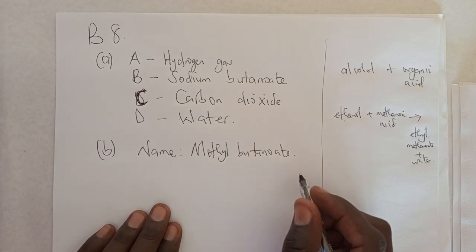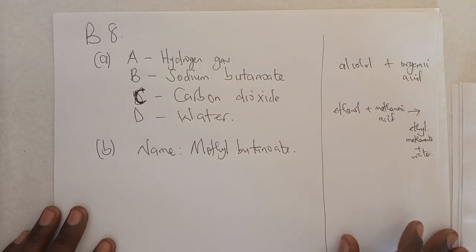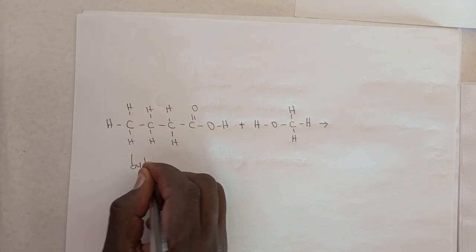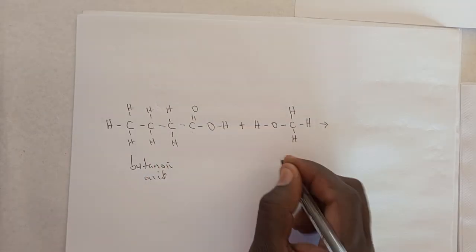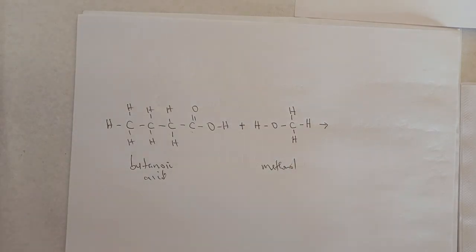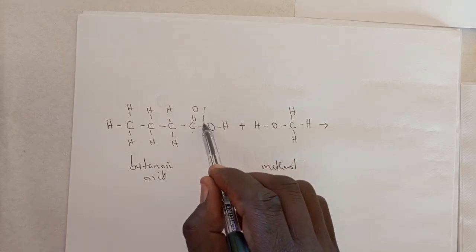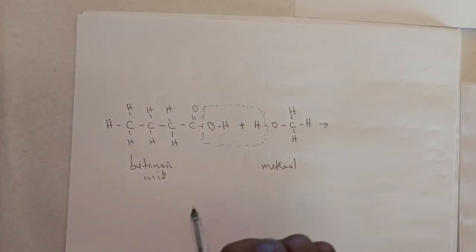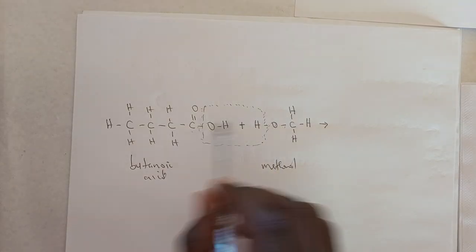We need to know its structure. How do you write its structure? It's usually written like this because you have butanoic acid whose structure is H, then you have C, and then you have your C. This is our butanoic acid, and the other one is methanol.